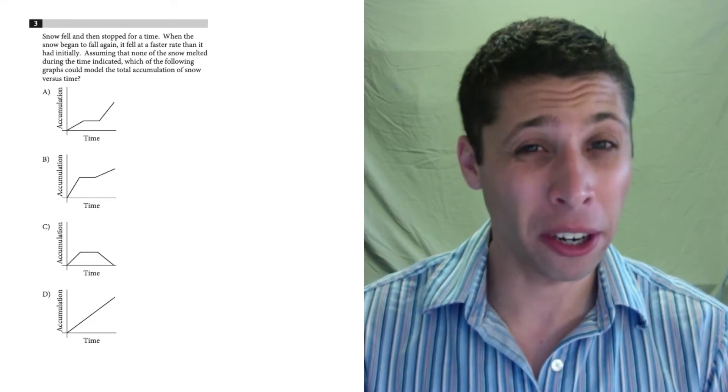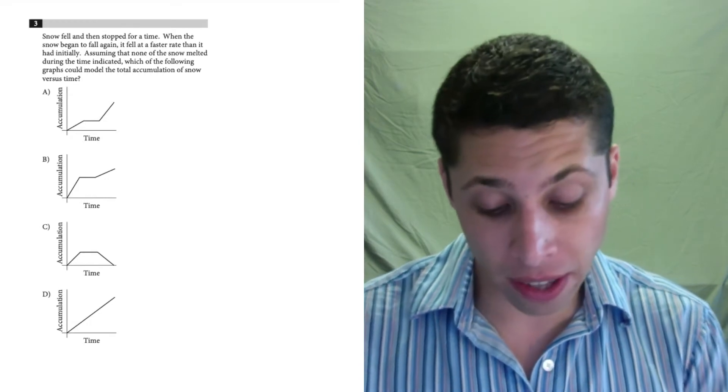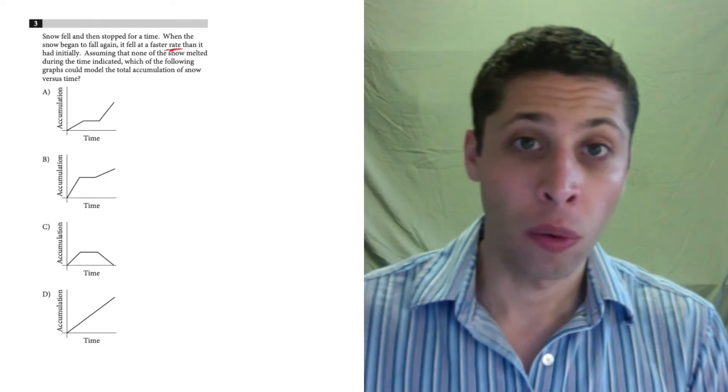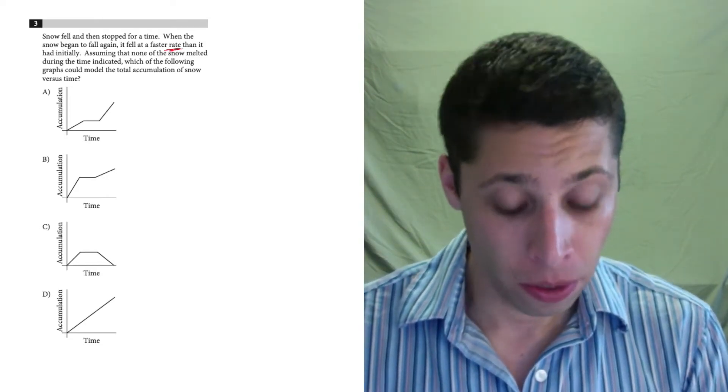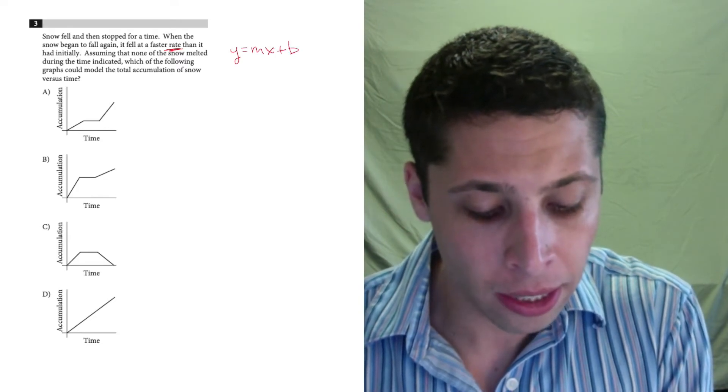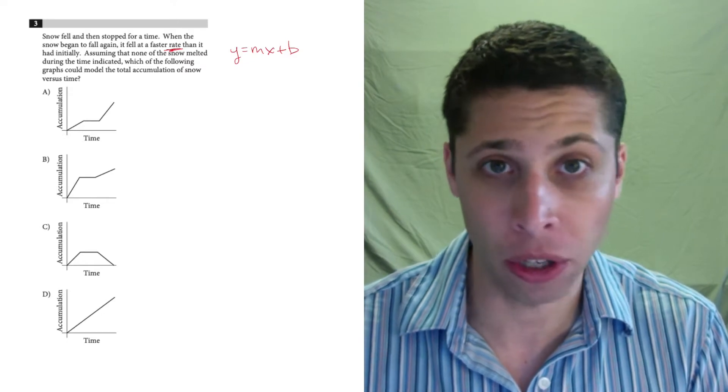So we want to make sure we read the story carefully. The only thing that maybe needs explanation here is the idea that when we talk about rate, we're talking about slope. So we're not really dealing with a traditional line in this question, but it might help to think about what we mean when we talk about lines.